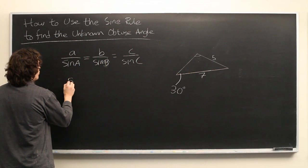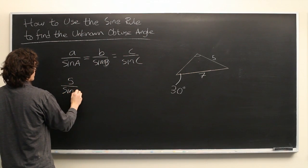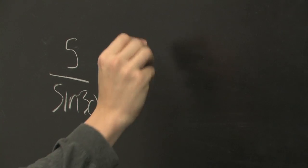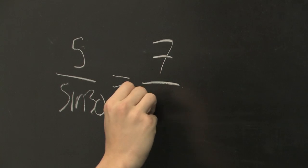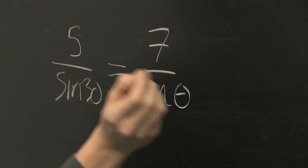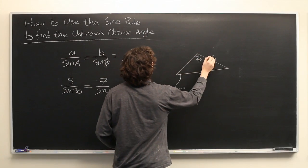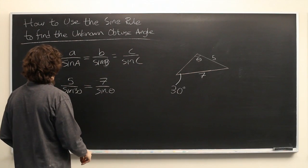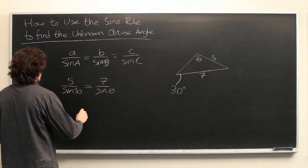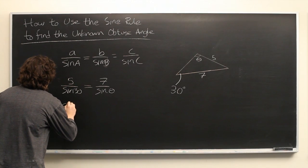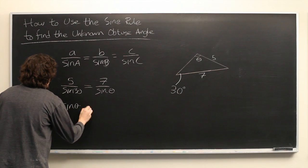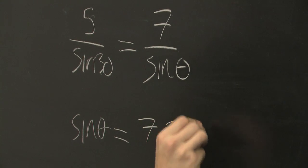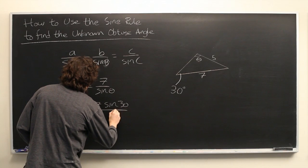So, we have 5 over the sine of 30. That should be equal to 7 over the sine of, we'll call it theta. And we can rearrange this a little bit, multiply both sides, and we get sine of theta is equal to 7 sine of 30 over 5.